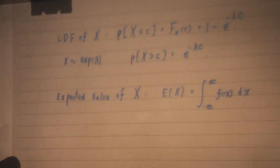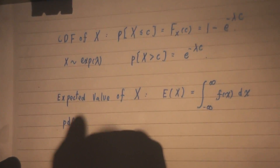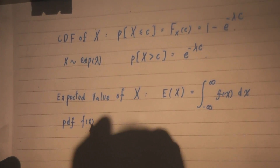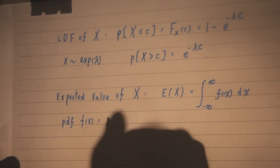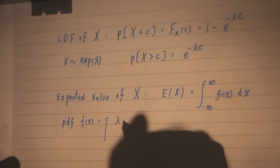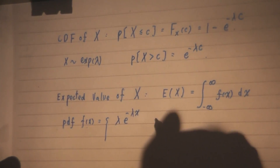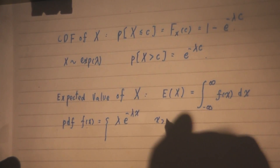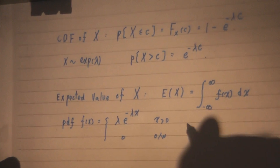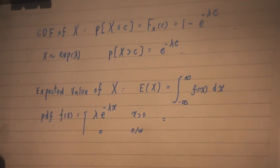But recall, what is the PDF of the exponential distribution? It's lambda e to the power of minus lambda x when x is greater than 0. Otherwise, it's 0. So let's apply this to our function here.